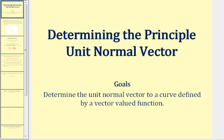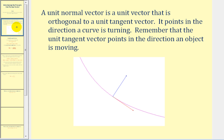Welcome to a video on the principal unit normal vector. A unit normal vector is a unit vector that is orthogonal or perpendicular to a unit tangent vector. It also points in the direction that a curve is turning. Remember that the unit tangent vector points in the direction an object is moving.